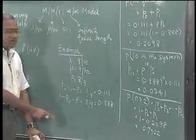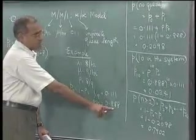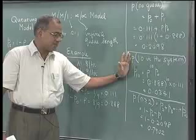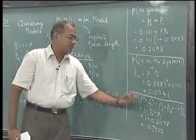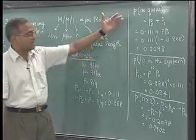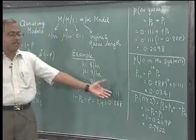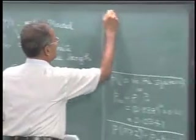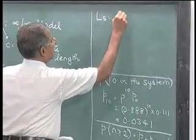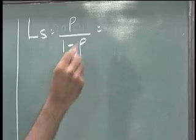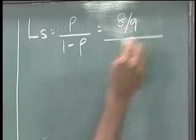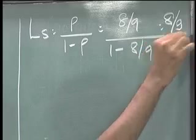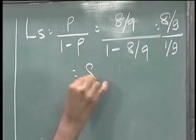Also, the server utilization is 1 minus P0. Probability that there is no queue is P0 plus P1. Probability that there are exactly 10 is given by P10. Probability that there are at least 2 is computed as shown. Like this, we can compute probabilities for any number of people in the system. For the expected number in the system, Ls is equal to rho by 1 minus rho, which is 8 by 9 divided by 1 minus 8 by 9, which is equal to 8.